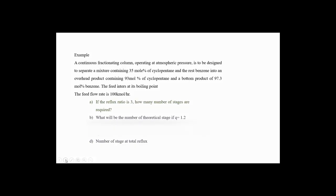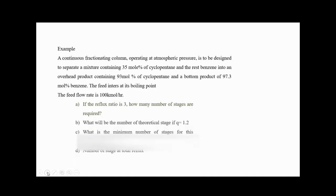The overhead product contains 93 mole percent cyclopentane and the bottom product is 97.3 mole percent benzene. The feed is at its boiling point and the feed flow rate is 100 kmol per hour. There are different questions to solve: if the reflux ratio is 3, how many stages are required? What is the number of theoretical stages if q equals 1.2? What is the minimum number of stages for total reflux operation?